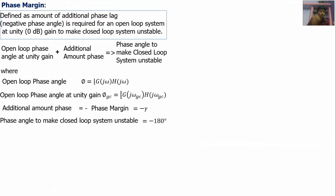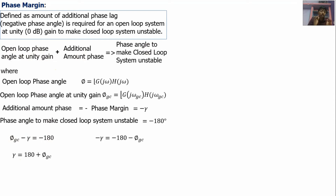The phase angle required to make the closed loop system unstable is minus 180 degrees. Substituting into the equation: ∠G(jω_gc) minus phase margin equals minus 180 degrees. So the phase margin equation is: PM = 180 + ∠G(jω_gc). This equation is derived from the definition. If you clearly understand the derivation, you can write this phase margin equation.